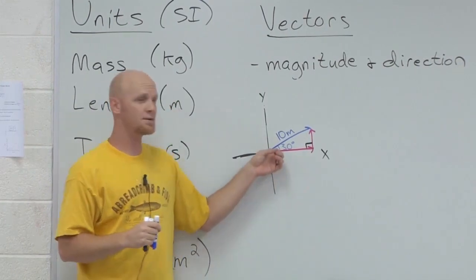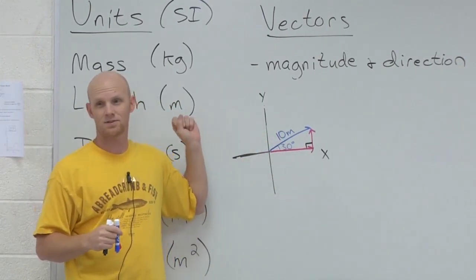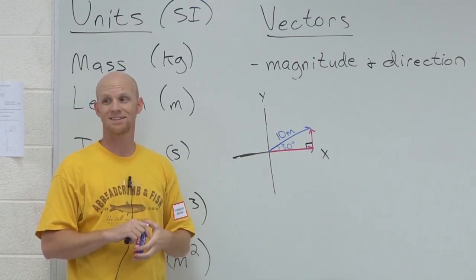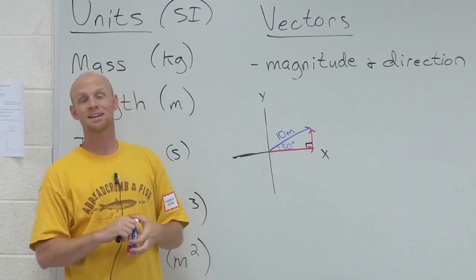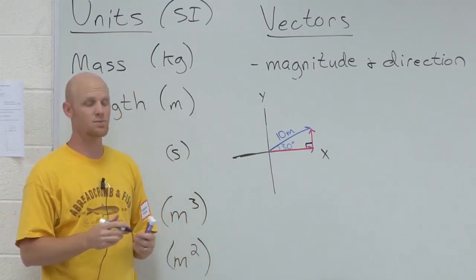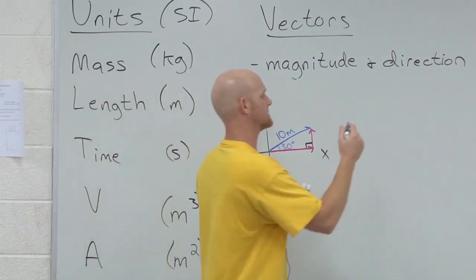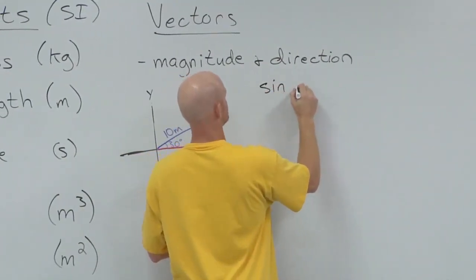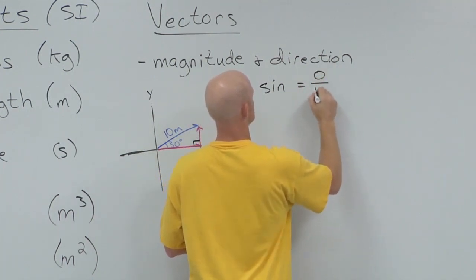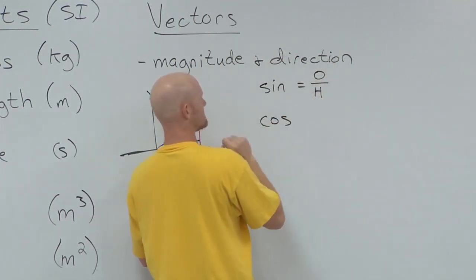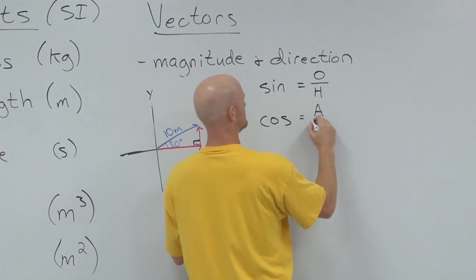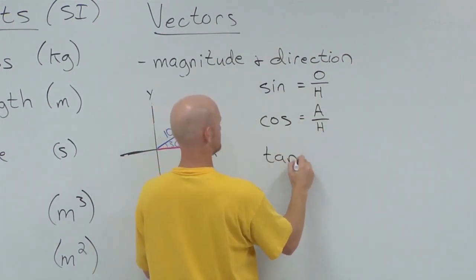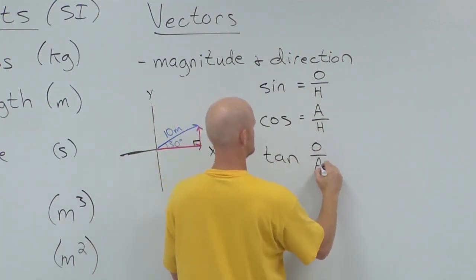We're also going to use some of your trigonometric identities. What are your big trigonometric identities? Sine, cosine, and tangent. We'll actually end up using all three in some way, shape, or form. What's SOHCAHTOA mean? So — sine, cosine, and tangent. We'll end up using all three of these at some point.